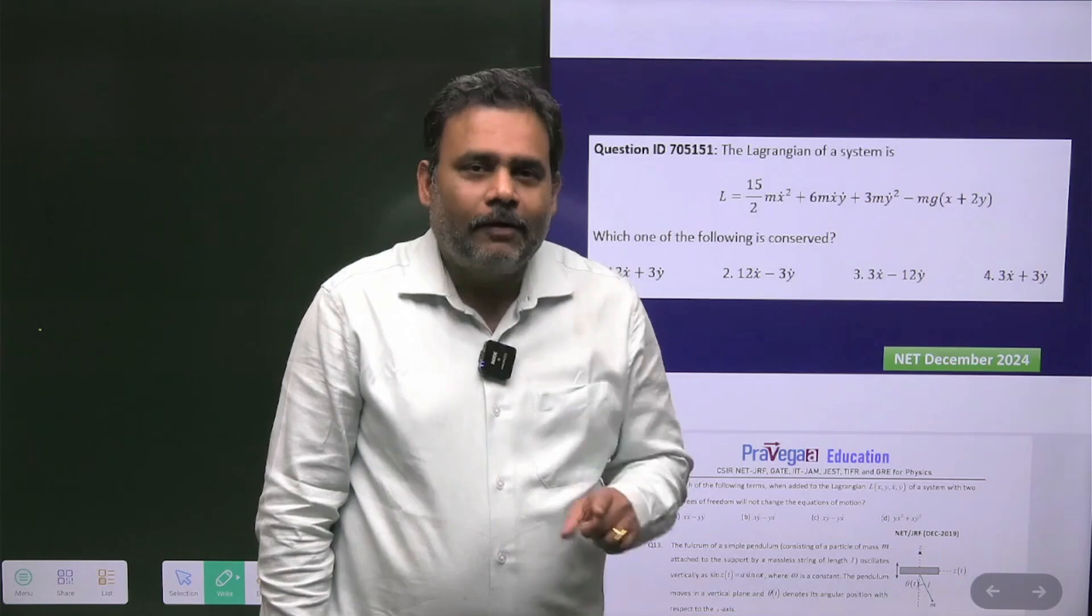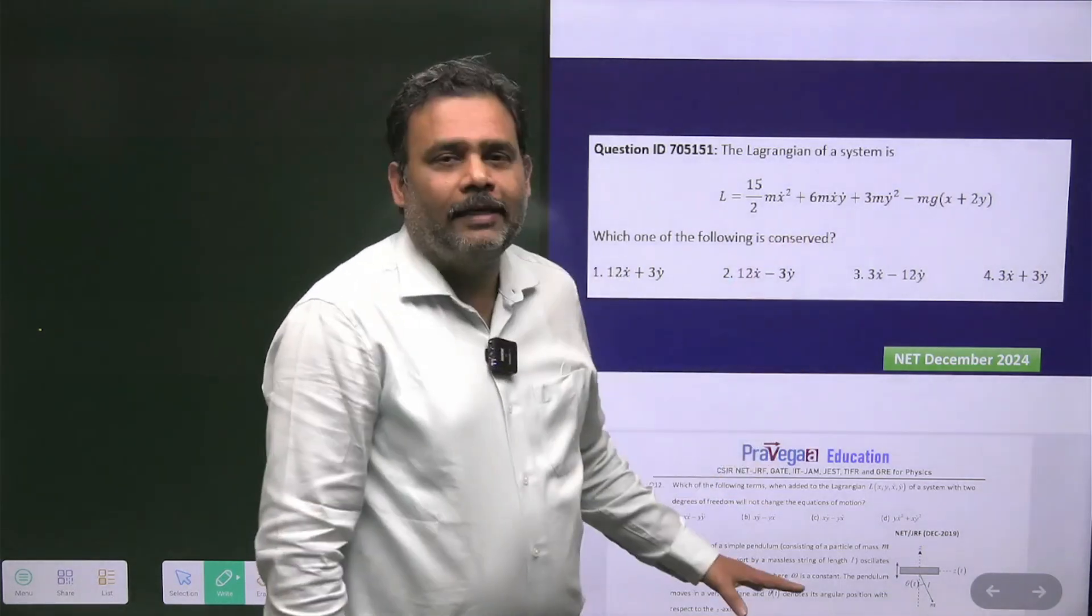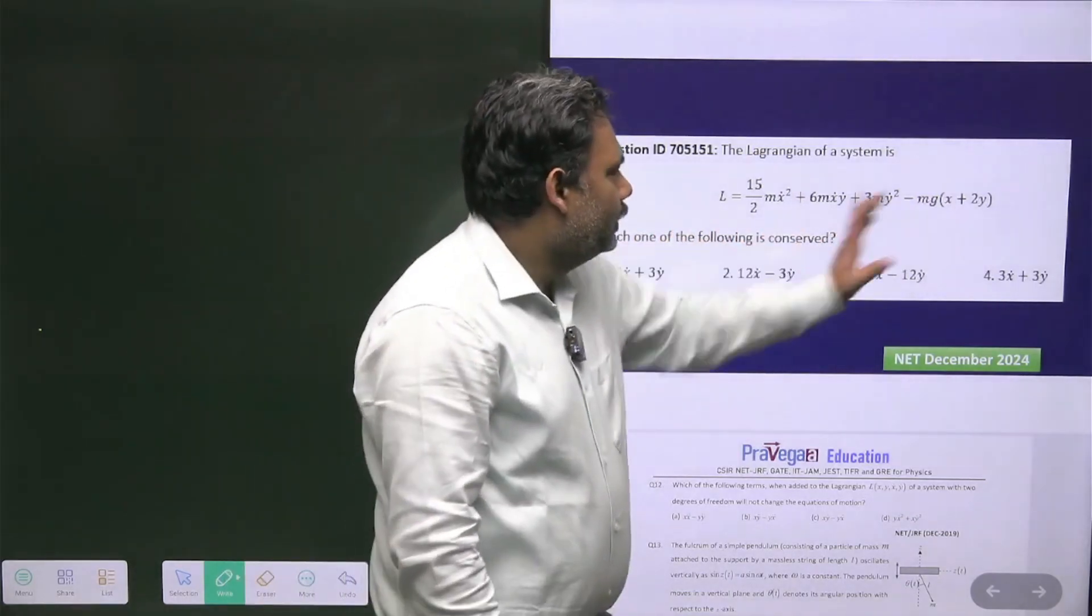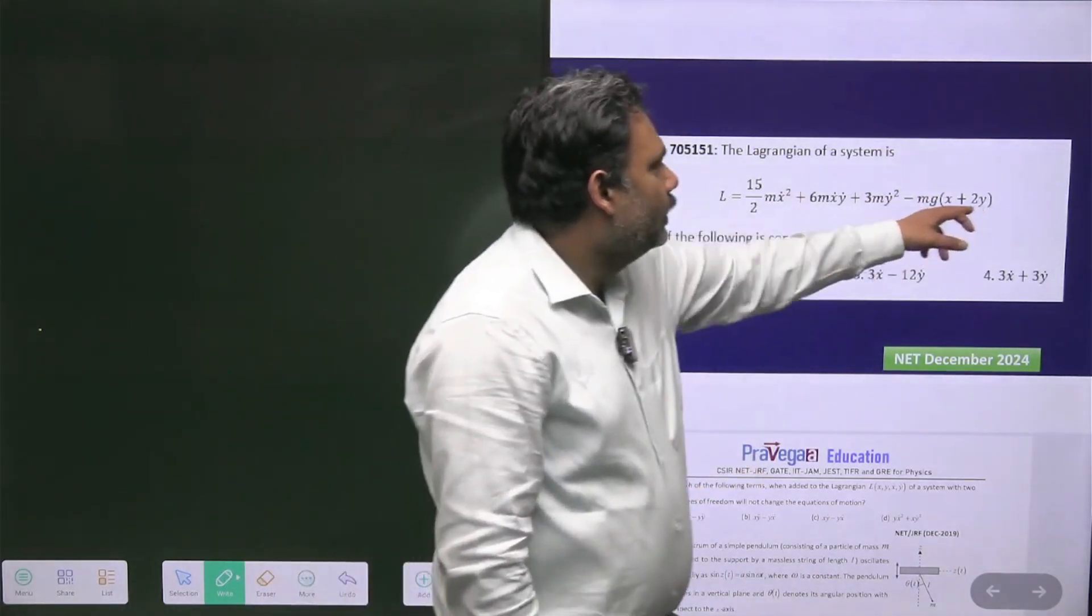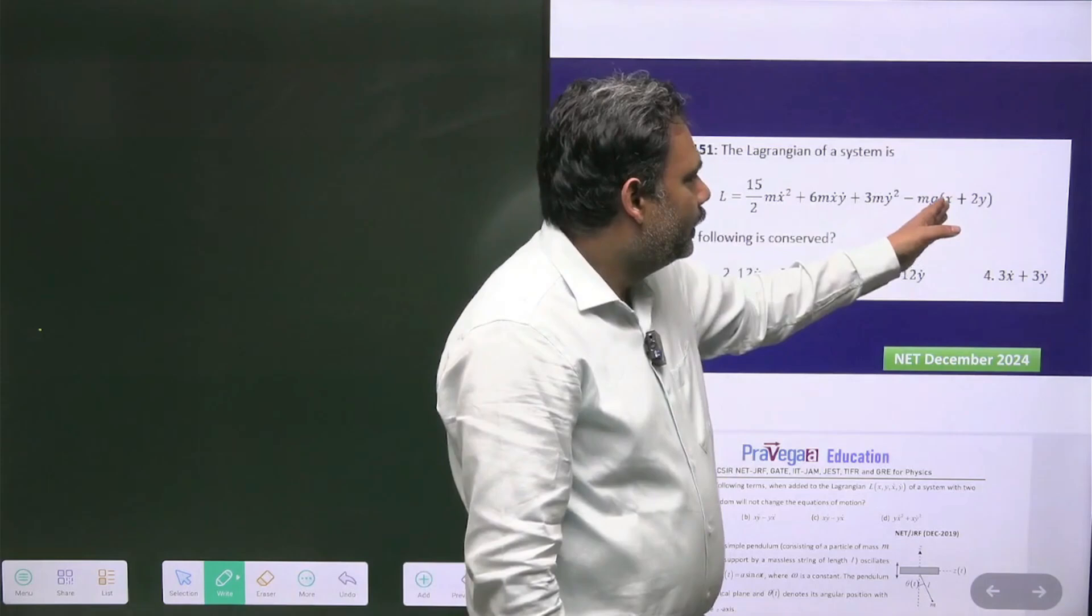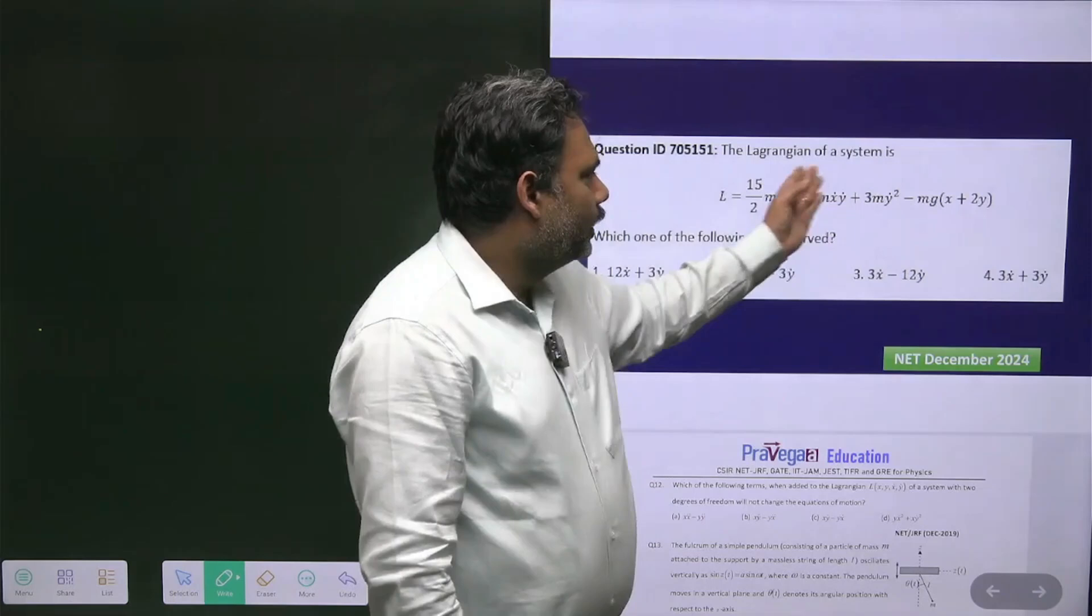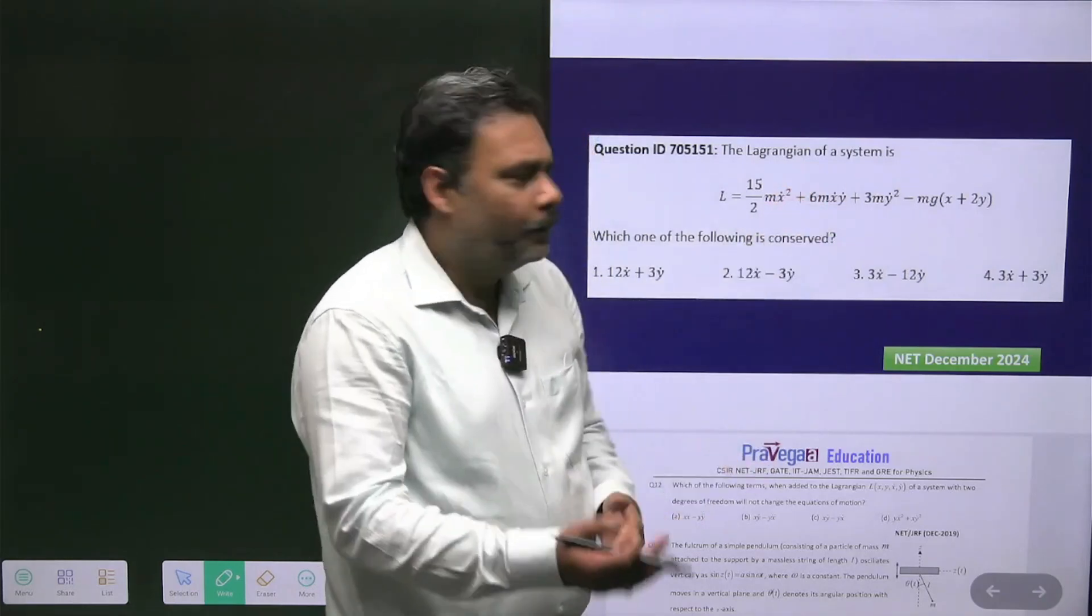But you'll see the nature of the question is exactly the same, only some numbers change. The Lagrangian is given and you can see the potential is linear - mgx + 2mgx + 2y.